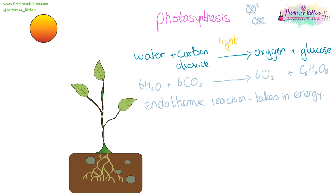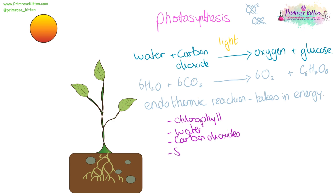There are certain requirements for photosynthesis. First of all, we are going to need chlorophyll — that is our green pigment in leaves. We are going to need water and carbon dioxide, because they are our reactants. And then we are going to need sunlight. The levels of these can greatly affect how much photosynthesis takes place.